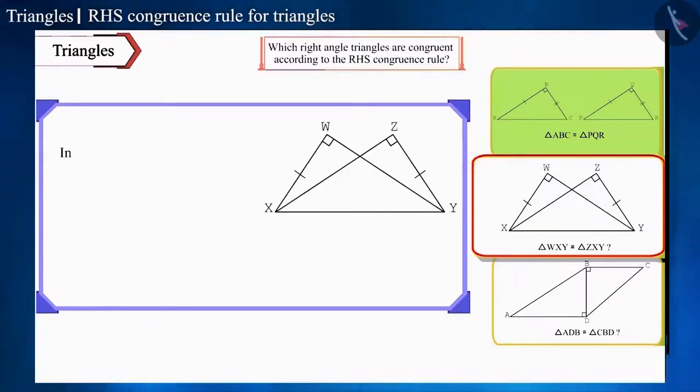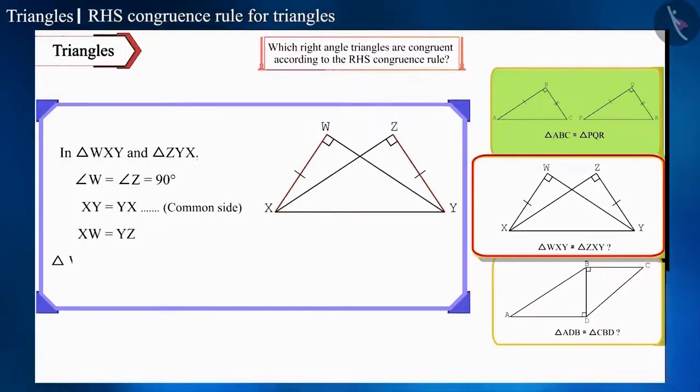In the second pair, in triangle WXY and triangle ZYX, angle W and angle Z are right angles. So these two triangles are congruent by the RHS congruence rule.